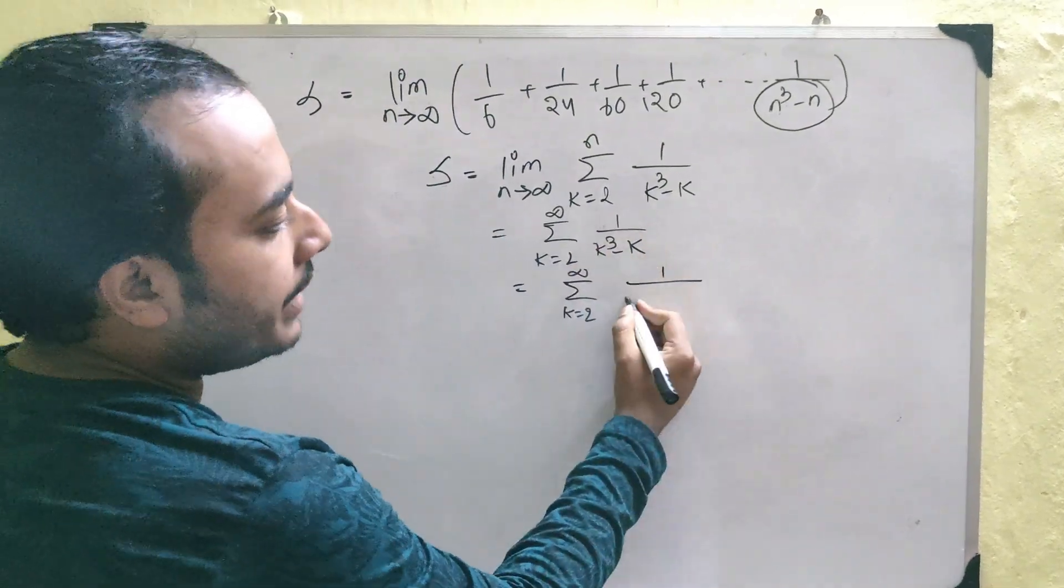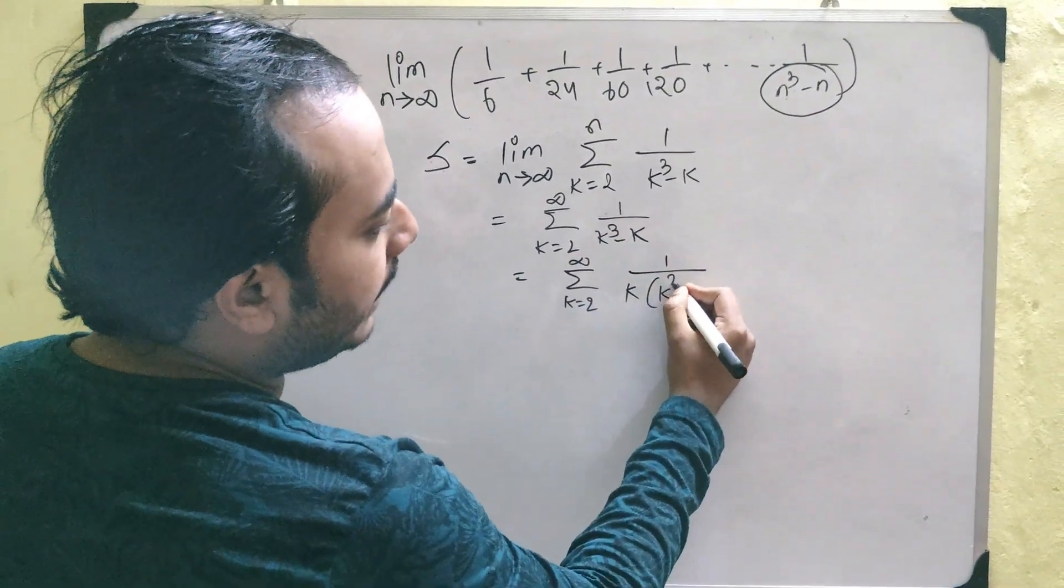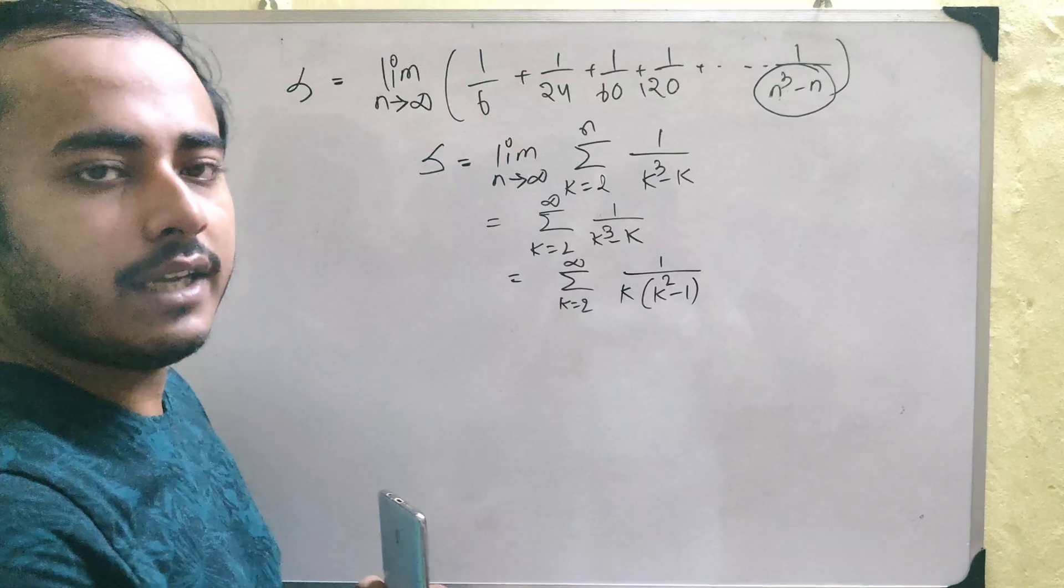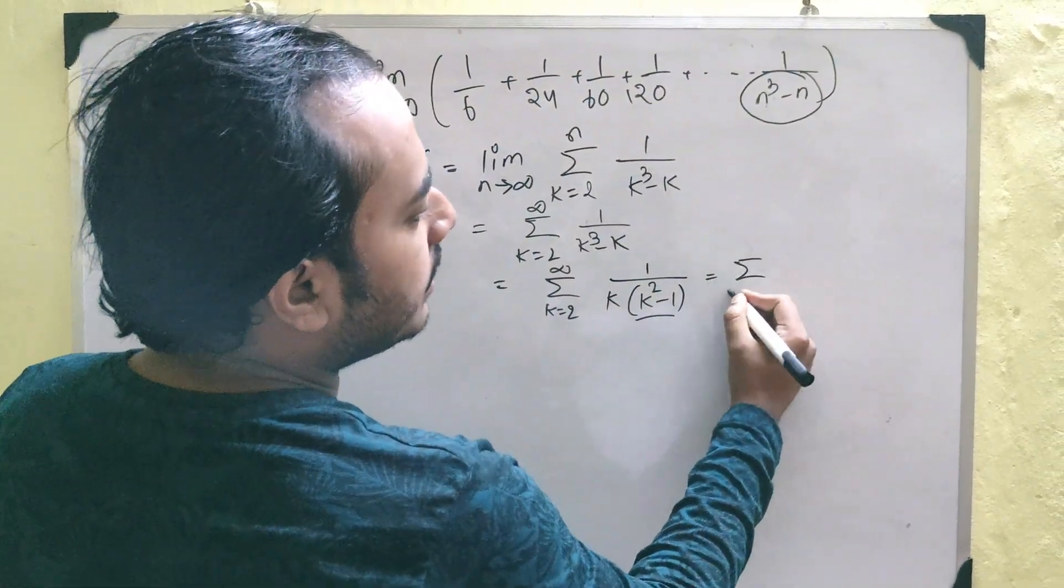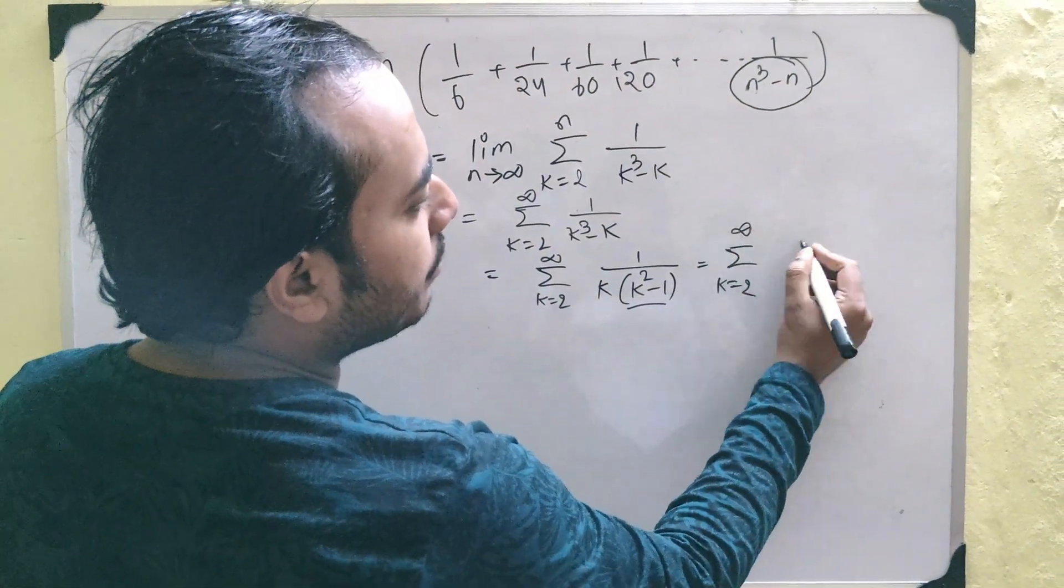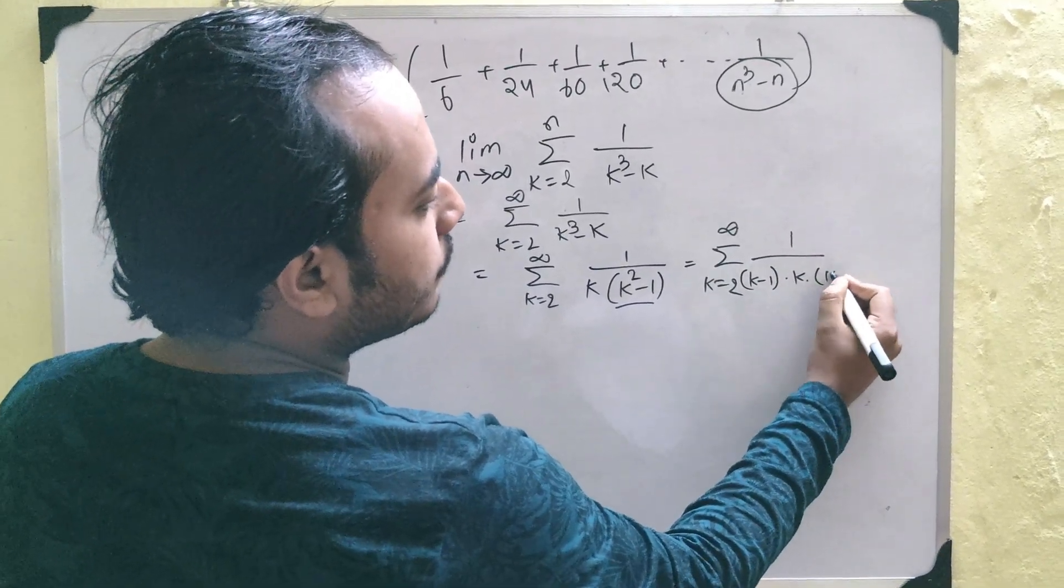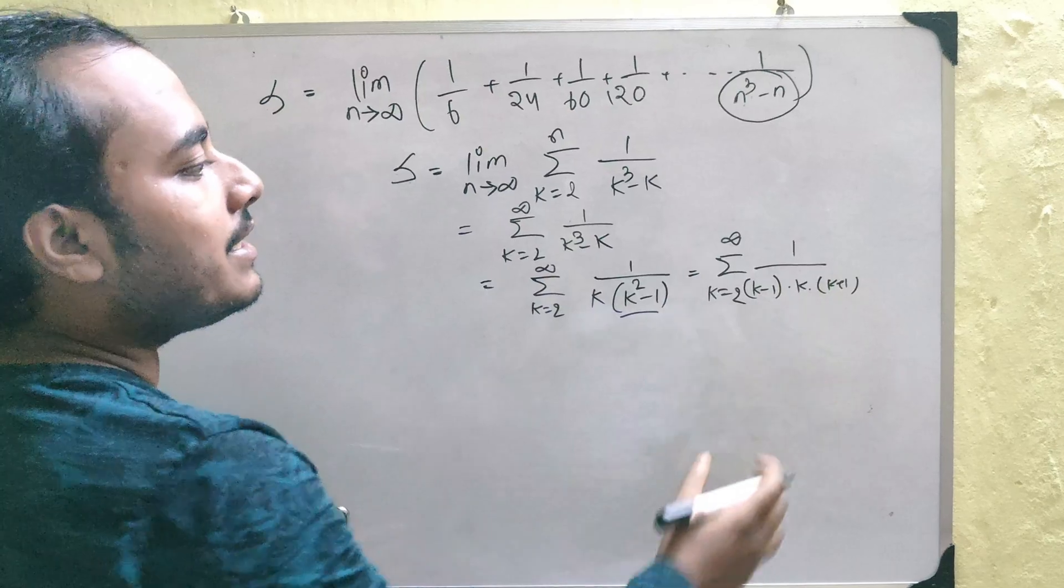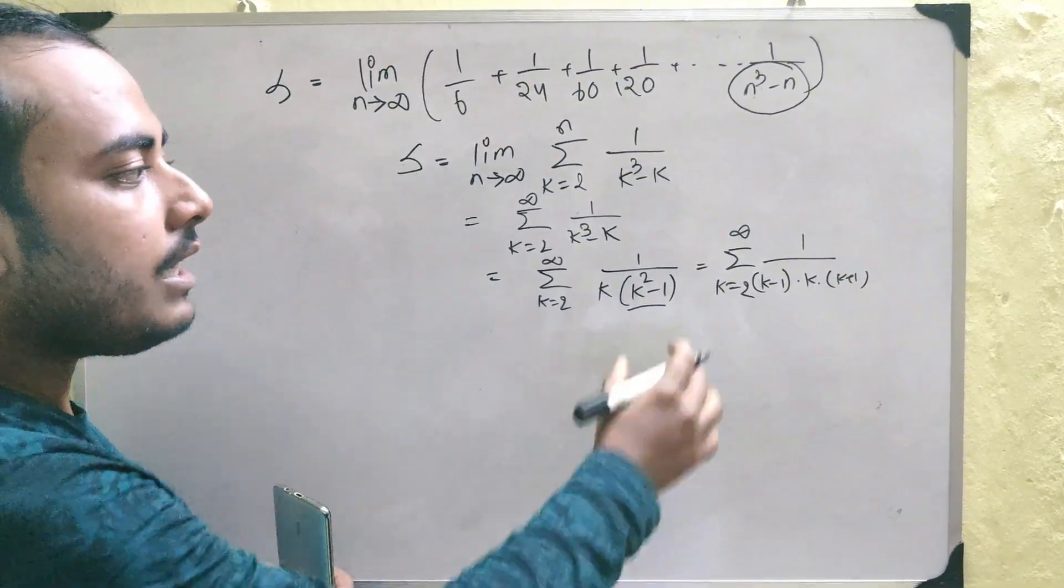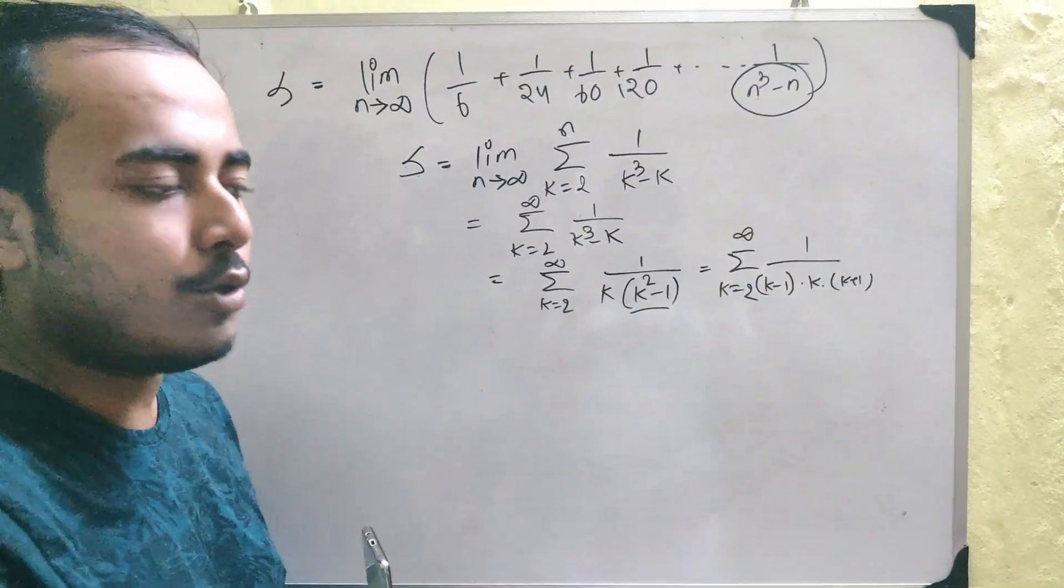First, take k common here. You will see it is k into k square minus 1, correct? And then factorize this. You will see that this sum is nothing but k equals to 2 to infinity 1 by k minus 1 into k into k plus 1. And wherever you have this consecutive terms in the denominator, you can understand that this is going to be a telescopic series.